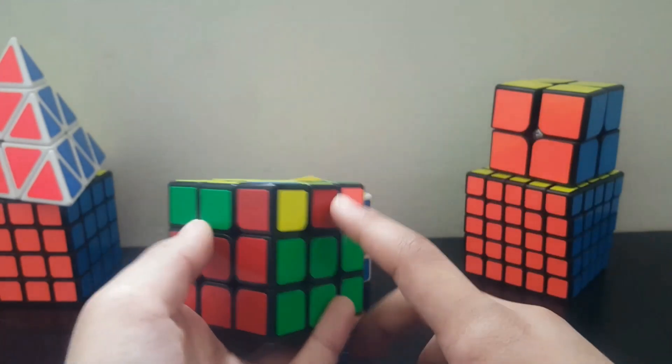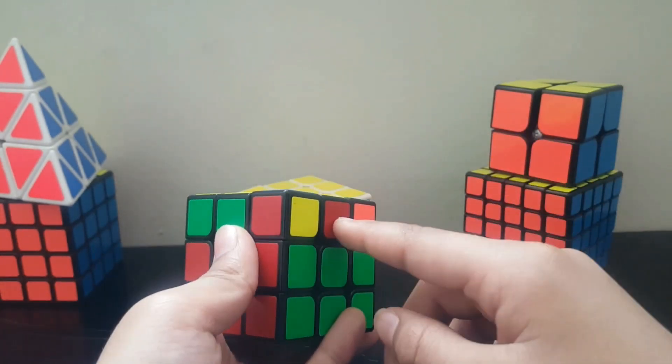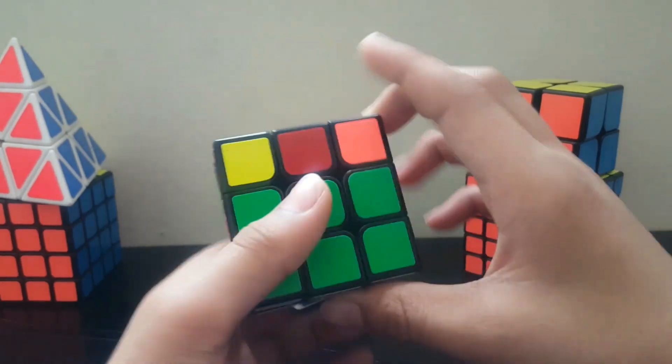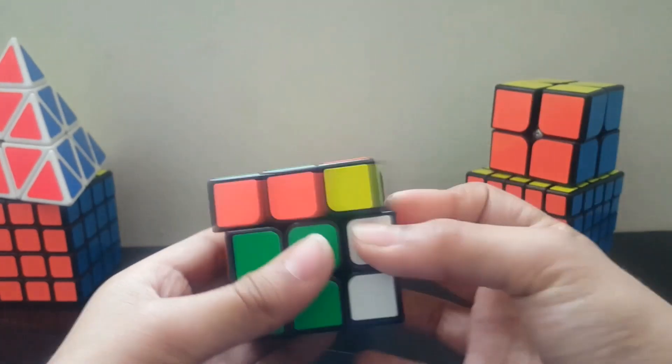Now we have to check in the other side. In the other side, it is just shuffled like this. Now we have to hold the cube like this and do this thing.